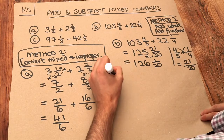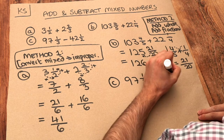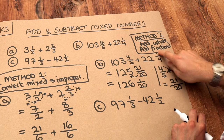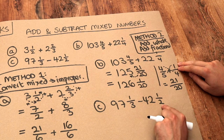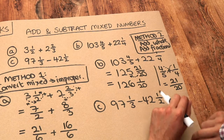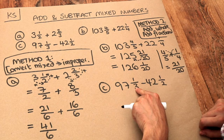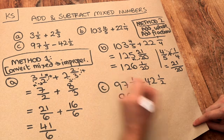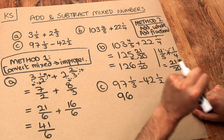What about part C? We've got 97 and a third minus 42 and a half. We can use Method 2 but subtract instead — subtract the whole parts and subtract the fractional parts. The problem is we can't do a third minus a half, because a half is bigger than a third without getting a negative number. The clever thing here is to borrow a whole and convert it into extra thirds. So if we sacrifice a whole — bringing 97 down to 96 — we have a whole extra to play with in the fractional part.